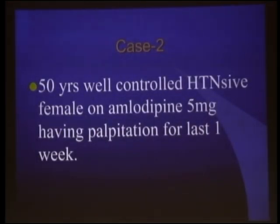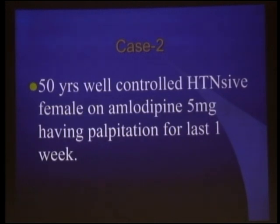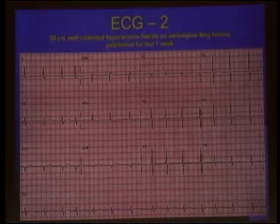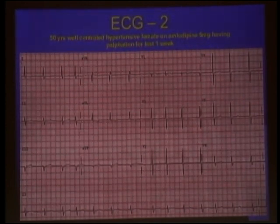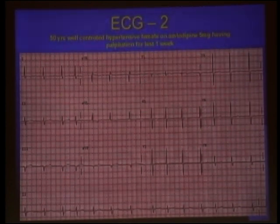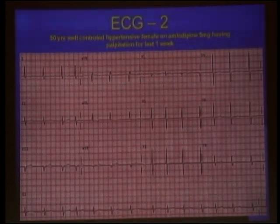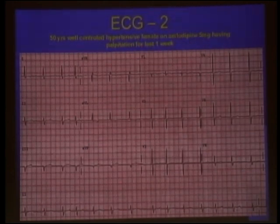Next scenario: 50-year-old, well-controlled hypertensive female on amlodipine 5mg, having palpitation for the last one week. This is a very common scenario in OPD — such ladies come with palpitation, they are hypertensive, they take their medicine. A smart physician did an ECG — atrial fibrillation. Hypertension is one of the causes of atrial fibrillation. Please do not label every female with palpitation as functional — something real may be going on. Just assess: is the pulse regular? Assessment of the pulse guides you with the symptoms — this patient needs proper evaluation.